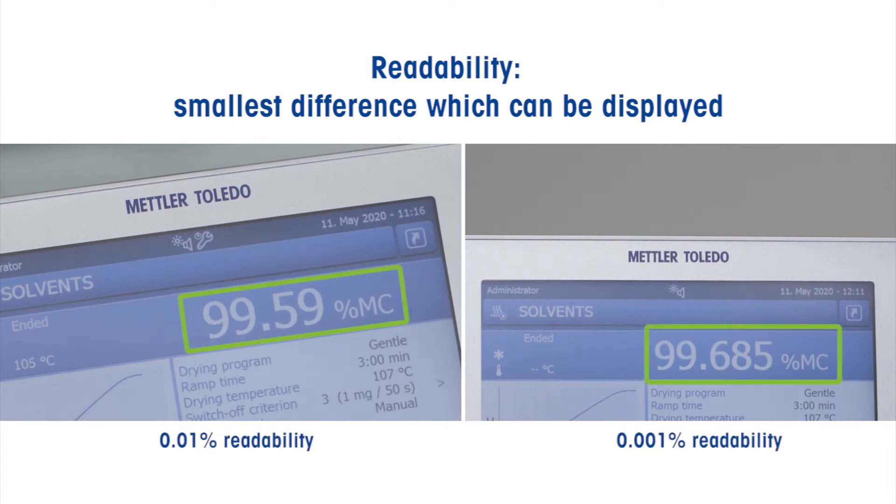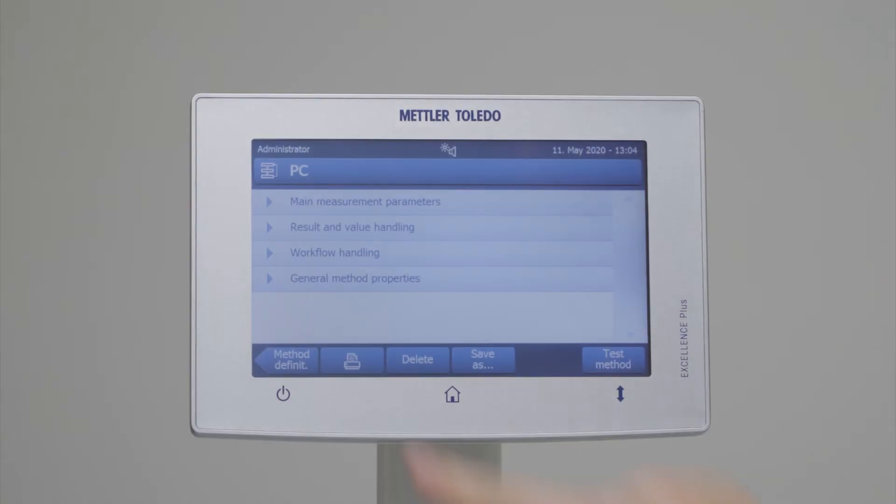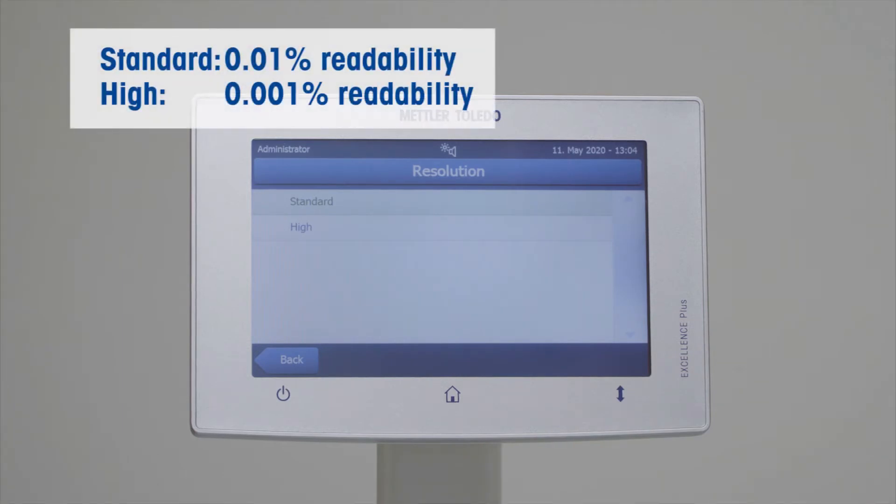The readability is the smallest difference which can be displayed on your device. It can be given in grams or percent moisture or dry content. Do not confuse readability with repeatability. Readability is simply how the result is displayed.